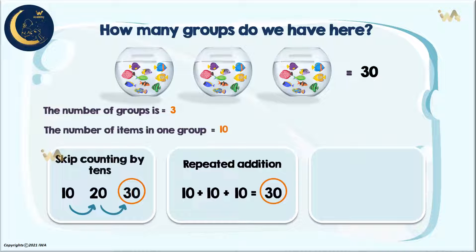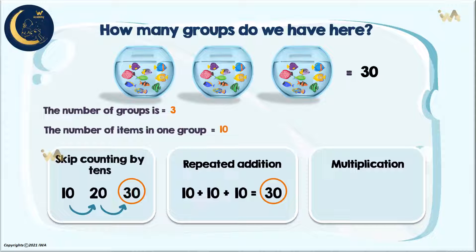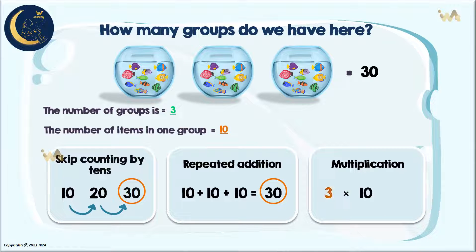Excellent! Let's use the multiplication process. Who will tell me how to write the multiplication sentence? First, we write the number of groups multiplied by the number of items in one group. How many groups do we have here? Three. Multiplied by the number of items — how many items do we have? Ten. So we have three multiplied by ten, which equals thirty. It's the same result.